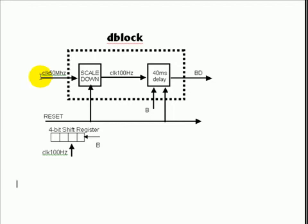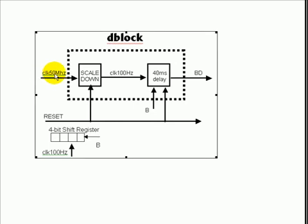The scale-down block is generated by scaling down our 50 megahertz by 500,000 to produce a 100 hertz signal.